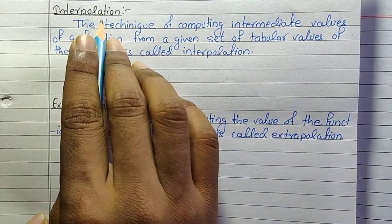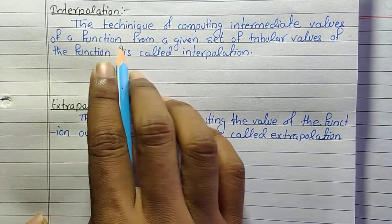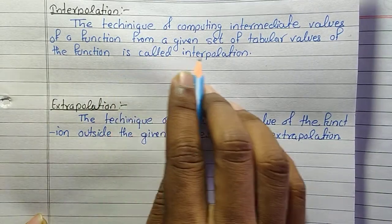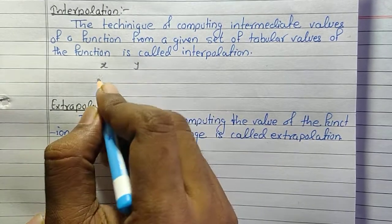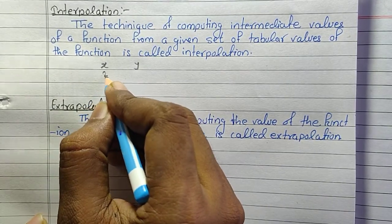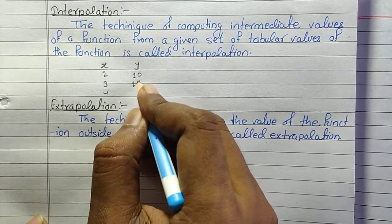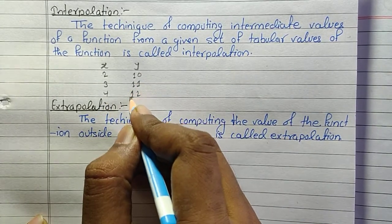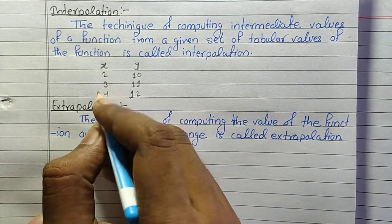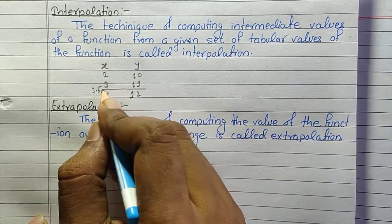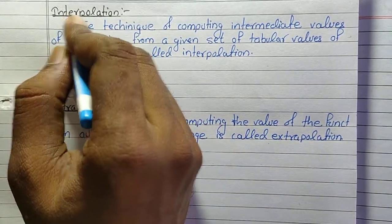The meaning of interpolation is the technique of computing intermediate values of a function from a given set of tabular values of the function. For example, suppose x consists of values 2, 3, 4 and the value of y is 10, 11, 12. If we are asked to find the value of 3.5, which is the middle value between 3 and 4, then this method is called interpolation.